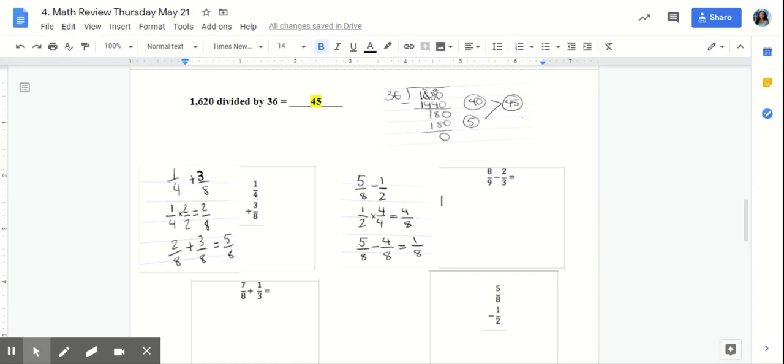Our next problem, we have some fractions that we're going to add and subtract. Number one, we have 1/4 plus 3/8. We know that we can't add unlike units, so we must create equivalent fractions.